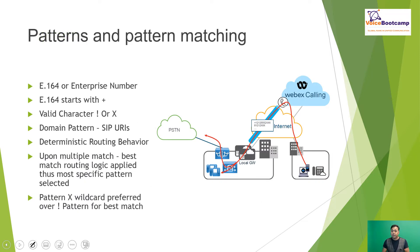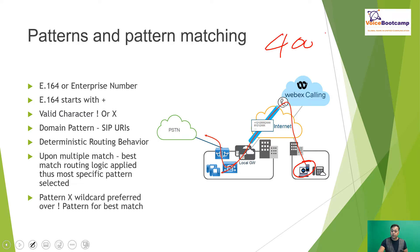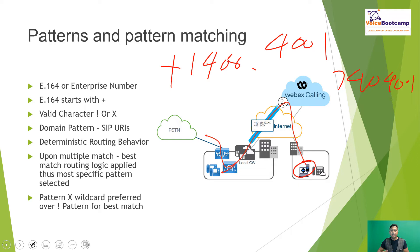Now the pattern and pattern matching. A user internally may establish a call that is either internal or for a number accessed through a PSTN. Usually the user will dial a numeric pattern. A numeric pattern can be represented by dialing an enterprise number such as 4001, a 7-digit number like 7404001, or an E.164 number such as +1 408 followed by 7 more digits.